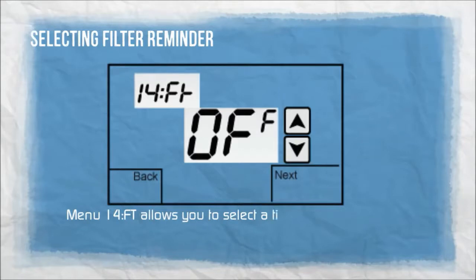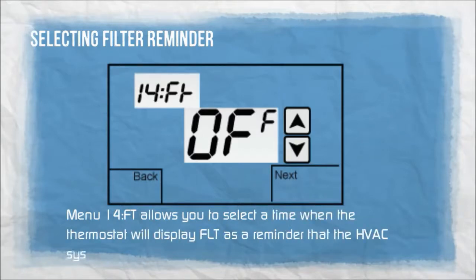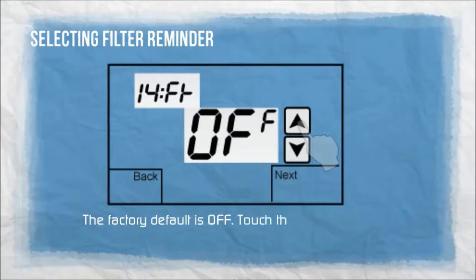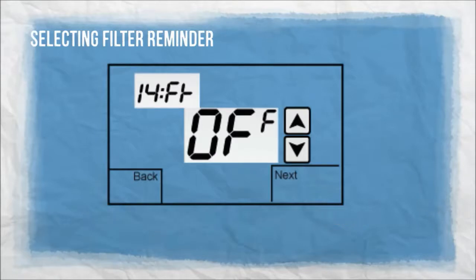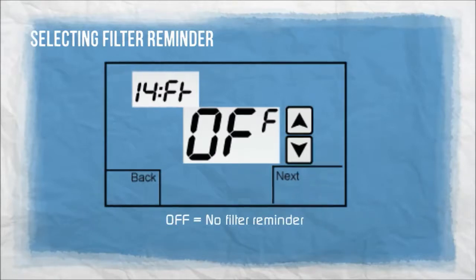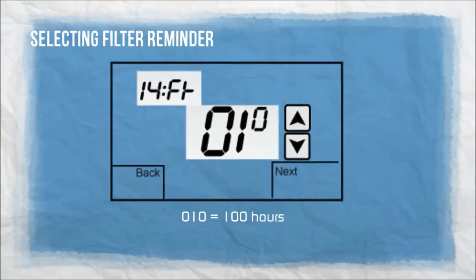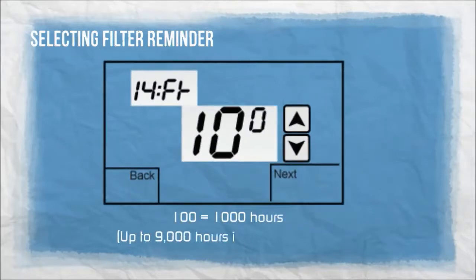Menu 14FT allows you to select a time when the thermostat will display FLT as a reminder that the HVAC system filter or filters should be replaced. The factory default is off. Touch the up or down arrows to set the filter reminder. Off: no filter reminder. 010: one hundred hours. 100: one thousand hours, up to nine thousand hours in one hundred hour steps.